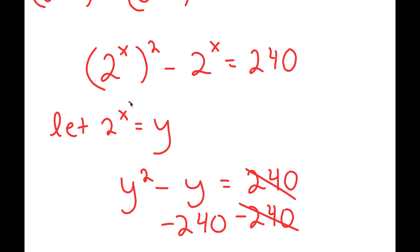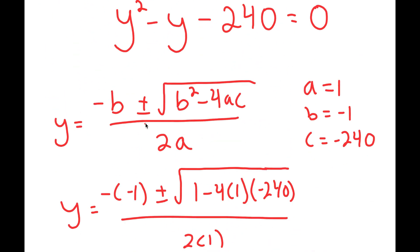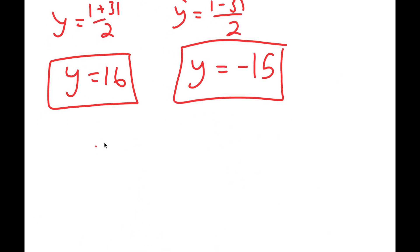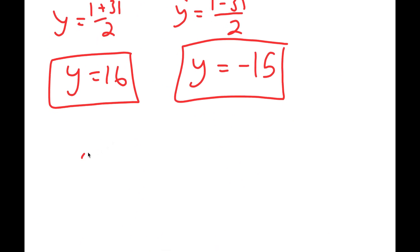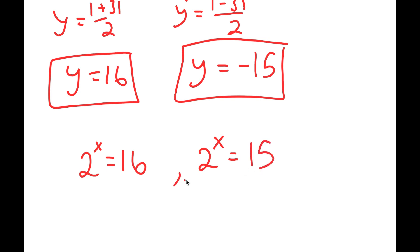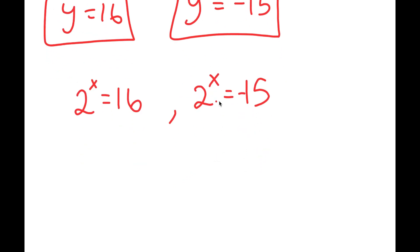So now going back, remember how I let 2 to the power of x equal to y. Meaning, 2 to the power of x is equal to 16, and 2 to the power of x is equal to negative 15. Now, we can't solve this second equation because we can't take the power of a positive number and make it equal negative. So there is no solution to that.